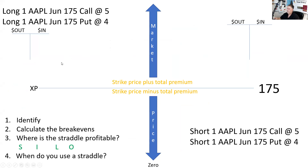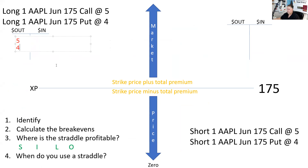Here I have a choice to buy the stock at 175 — that's what the call means. I paid five points to have a choice to buy the stock, shown in red to represent money out. And I paid four points to have a choice to sell. So ultimately I'm out nine points total premium.